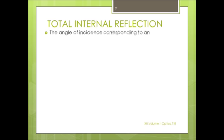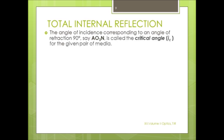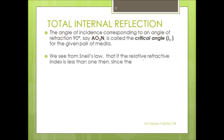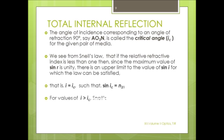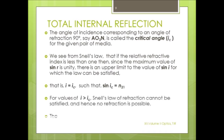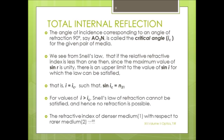The angle of incidence corresponding to an angle of refraction 90 degrees, say AO3N, is called the critical angle IC for the given pair of media. We see from Snell's law that if the relative refractive index is less than 1, then since the maximum value of sin R is unity, there is an upper limit to the value of sin I for which the law can be satisfied. That is I equal to IC such that sin IC is equal to n21. For values of I greater than IC, Snell's law of refraction cannot be satisfied and hence no refraction is possible.